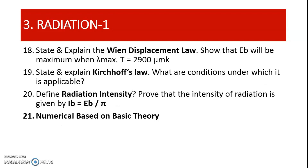For radiation, I have divided it into two parts. Part 1 covers basic theory and different laws. Kirchhoff's law and Wien's displacement law are the important laws — you need to prepare these two laws along with their derivations. A very important result is that intensity of radiation equals emissive power divided by pi. You also need to prepare numericals based on blackbody emissive power, monochromatic emissive power, lambda max — that is Wien's displacement law — and Kirchhoff's law. These numericals carry 4 or 7 marks in the GTU question paper.